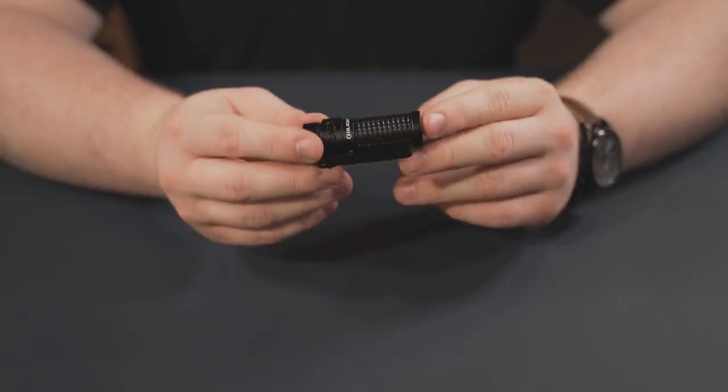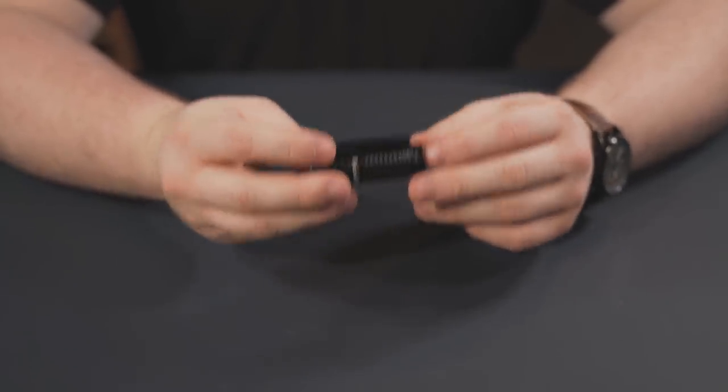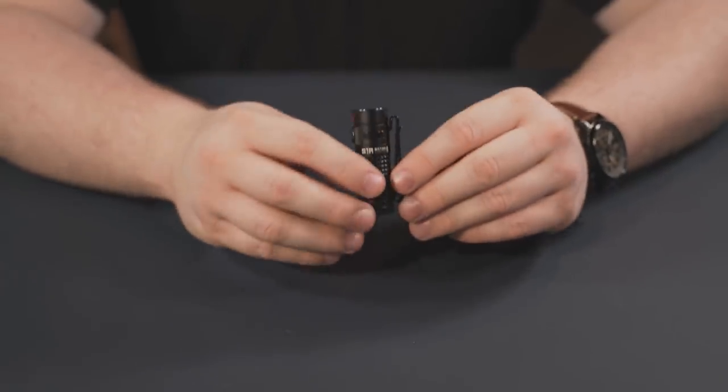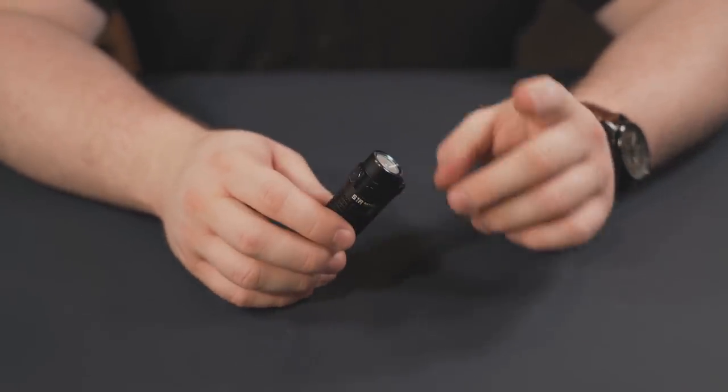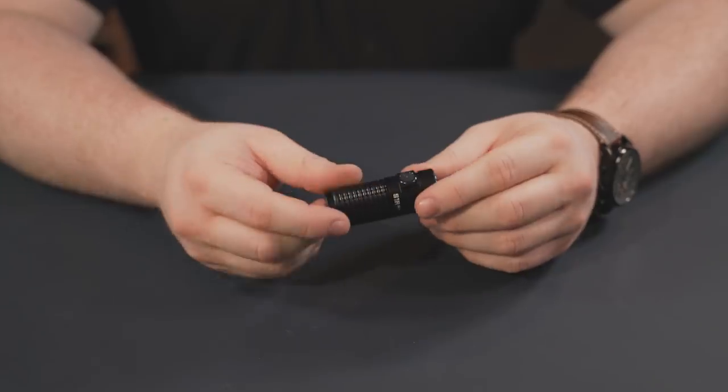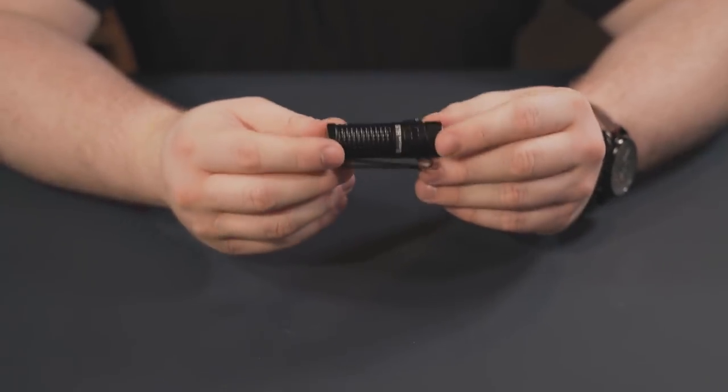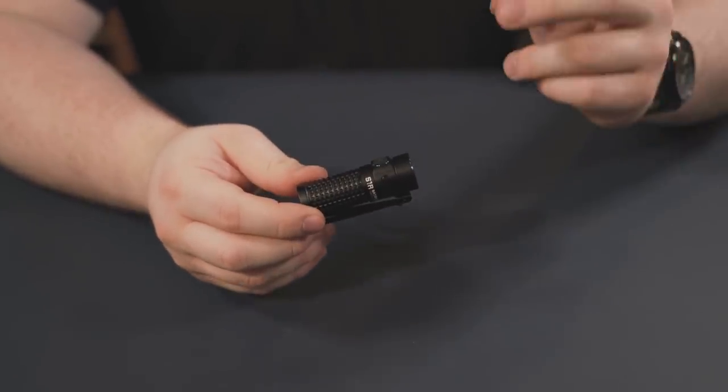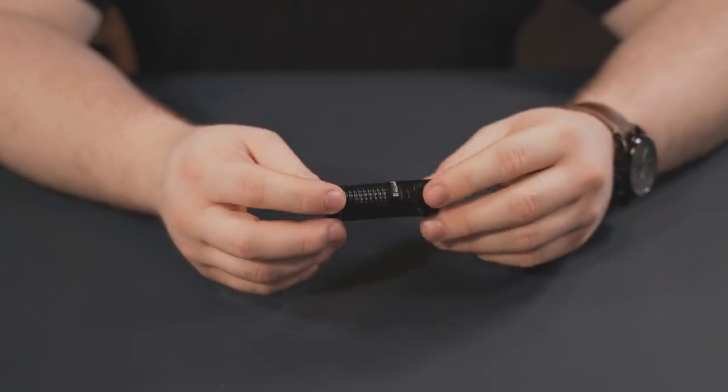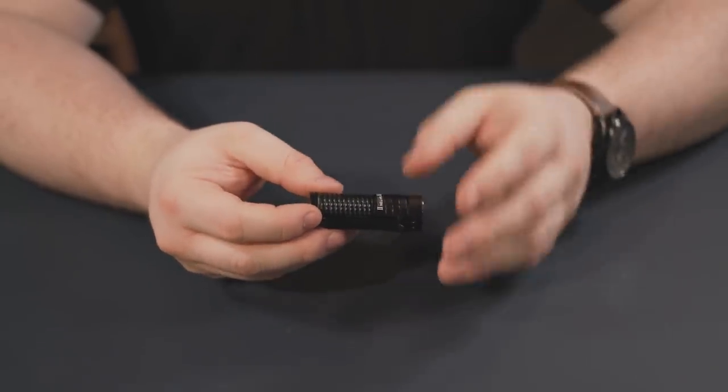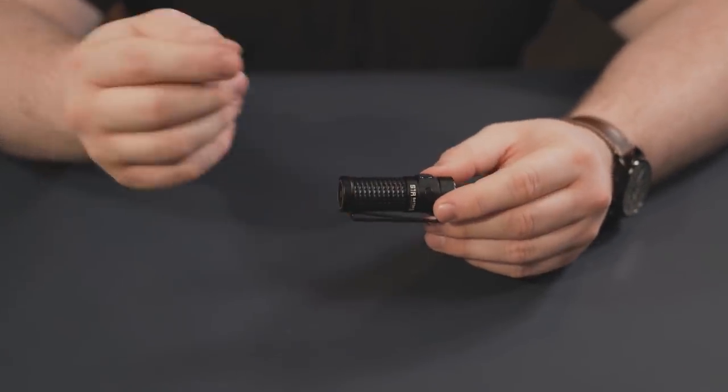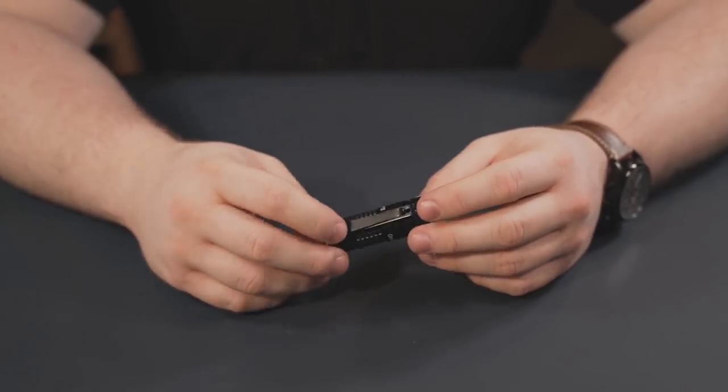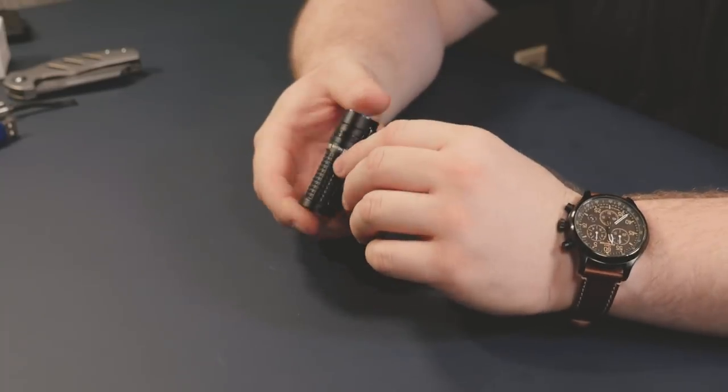So this flashlight actually costs $64.99. You can get it straight from Olight starting this Friday, the 28th of September. And if you buy it on that day, you can actually get 25% off its starting price. And if you buy two, you can get 30% off the total price. But if you spend over $99, they're actually doing a promotion where you get a free H05 headlamp, it's a pretty good deal.